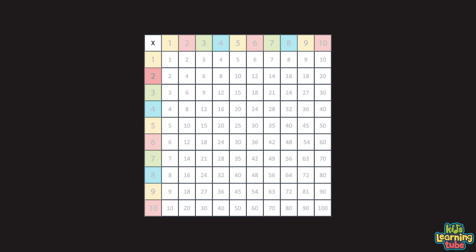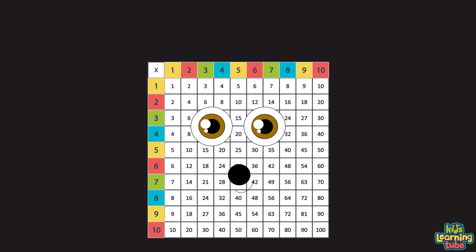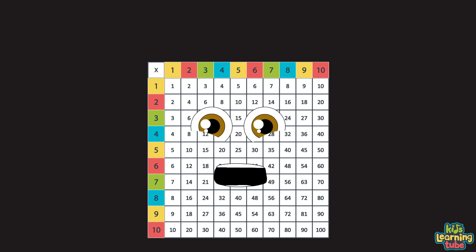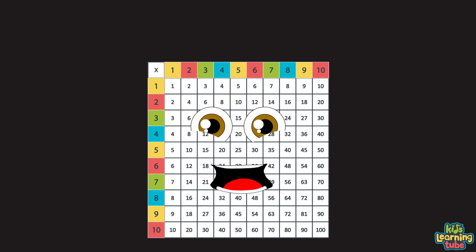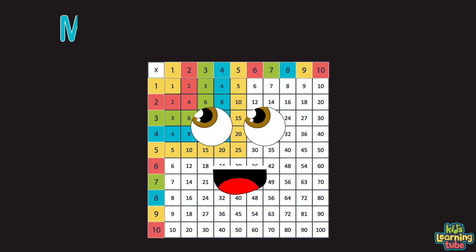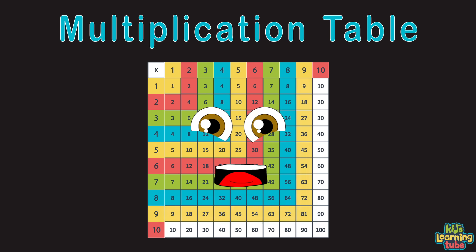Start at the number 3: 3, 6, 9, 12, 15, 18, 21, 24, 27, and 30. Download your times table sheet from KLT's site and practice multiplying till you get it right.